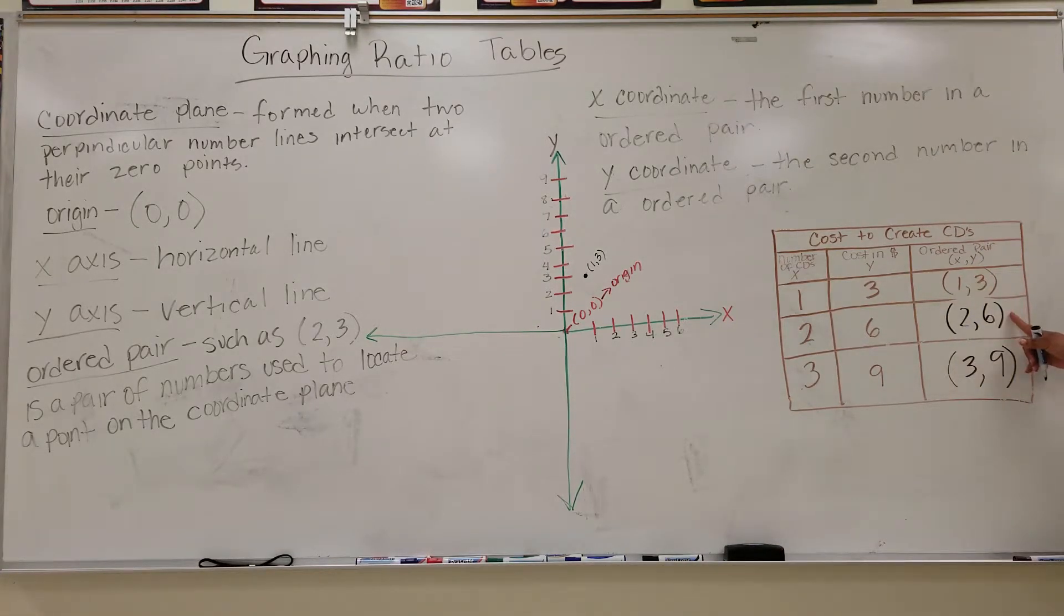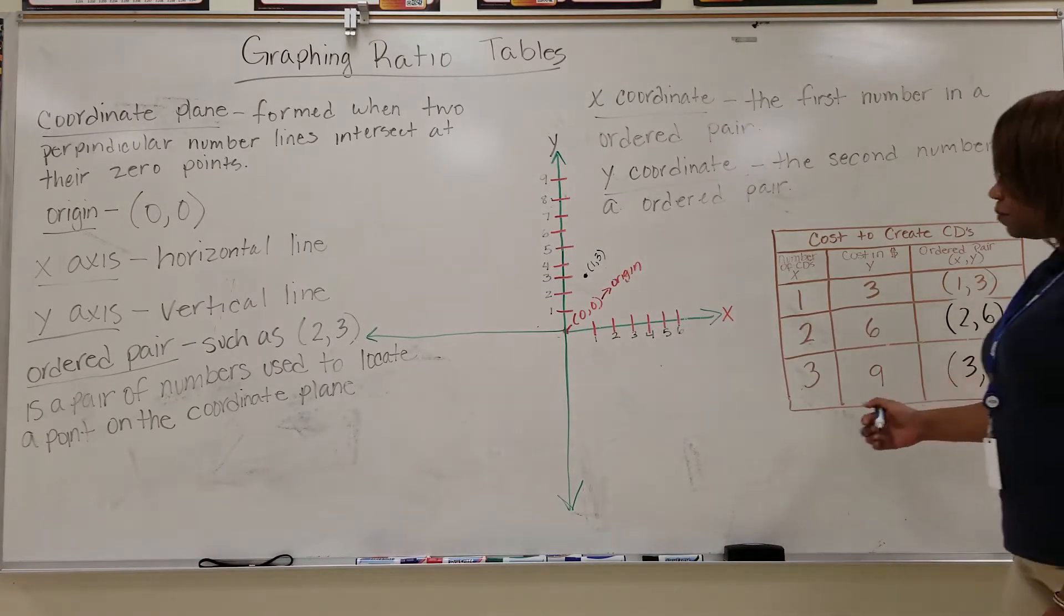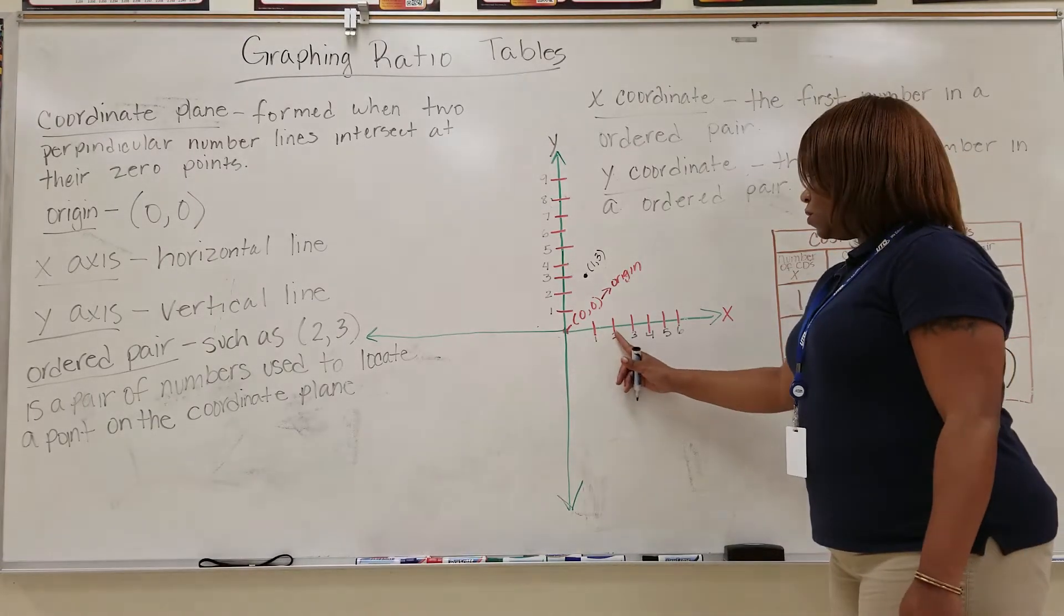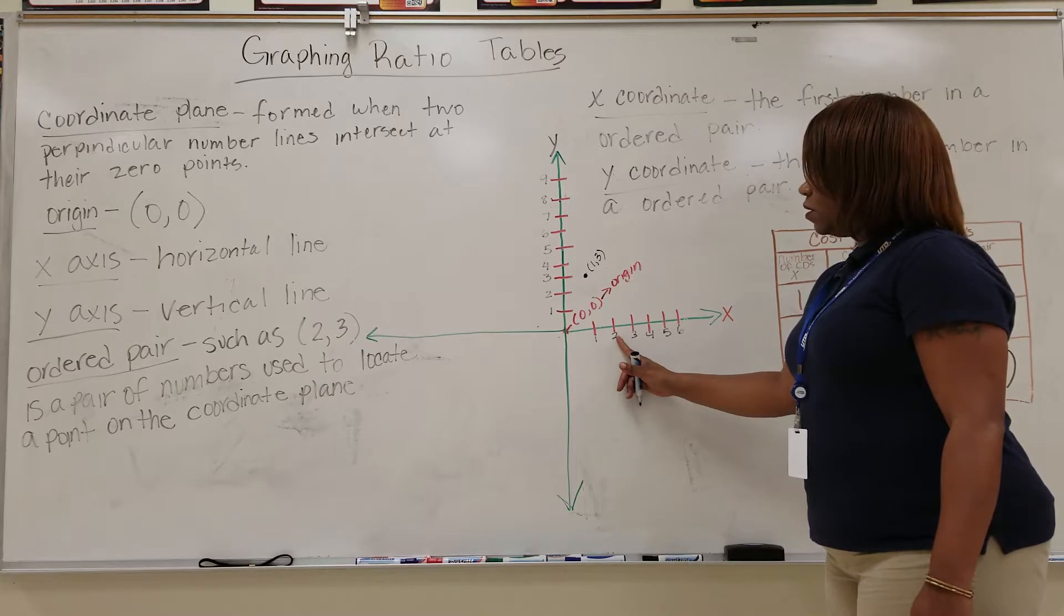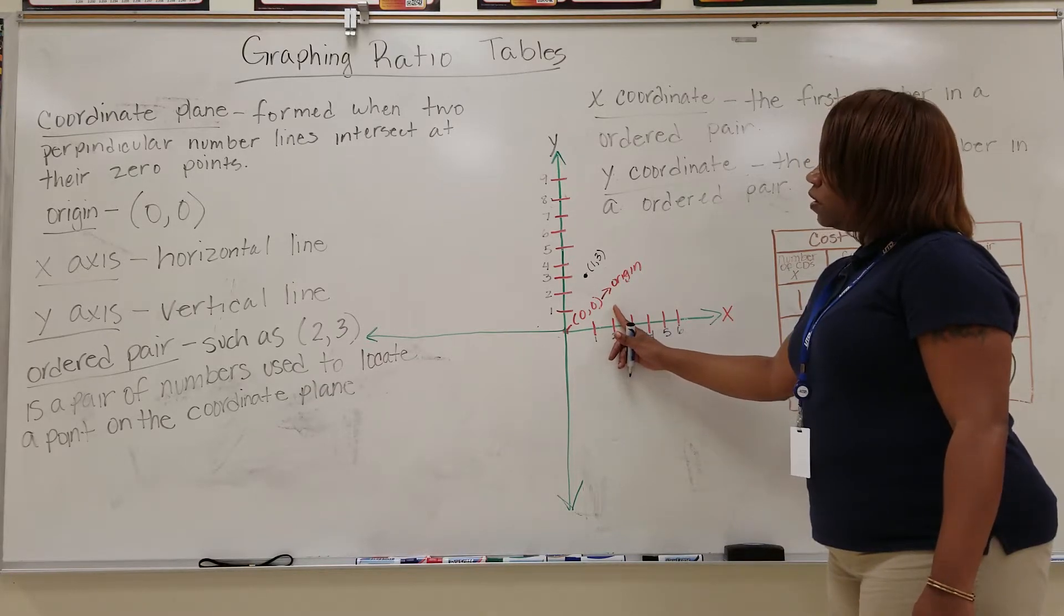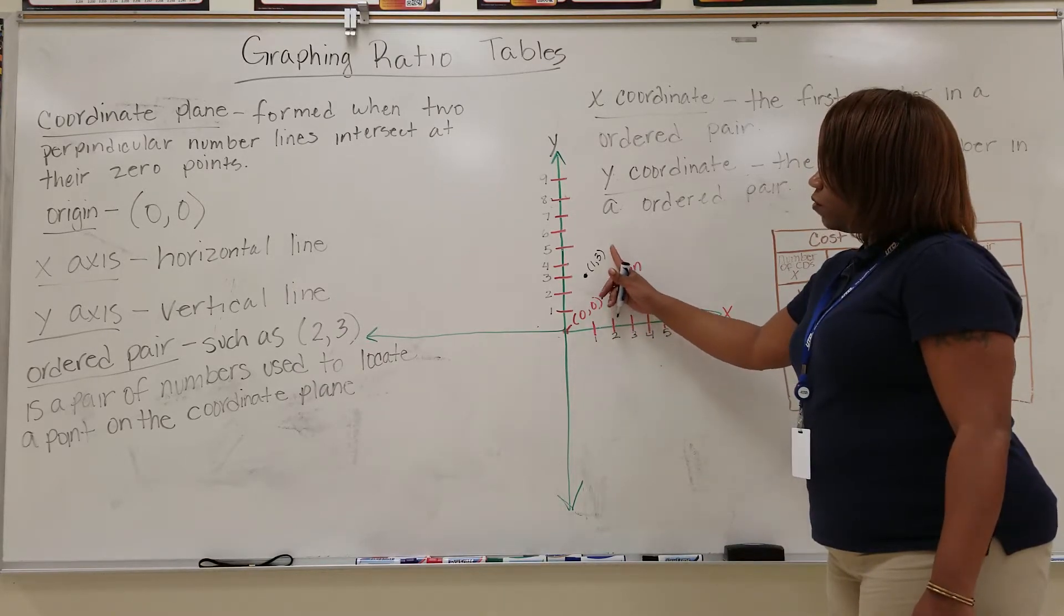Our second ordered pair is (2, 6). So we look at the two, the x-coordinate first, and then look at the y-coordinate, which is six. So we go on the x-axis, we go to two, and then look up and go up six spaces on the y-coordinate.